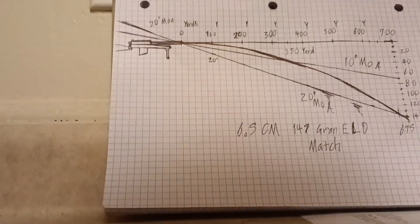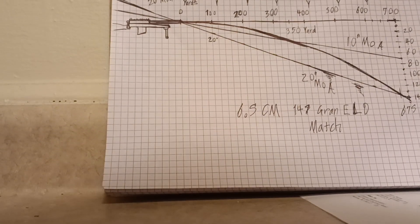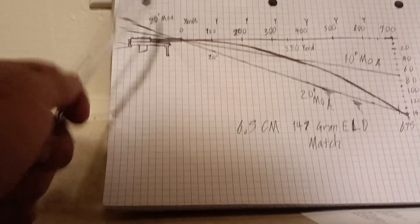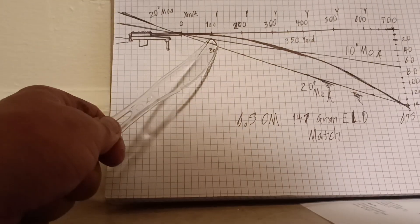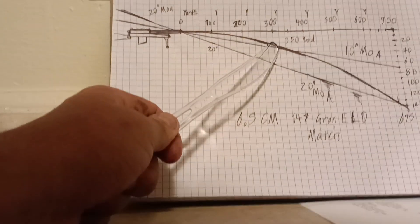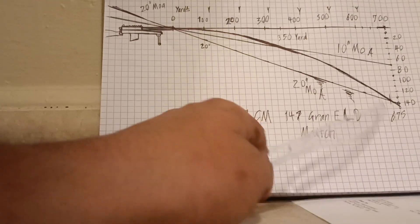You want to know what that fall pattern and flight path will look like. Put your height over bore on your gun at zero and put your zero range at zero so you can determine exactly how far it falls at 100, 200, and 300 yards. Make your hash marks and connect your dots.